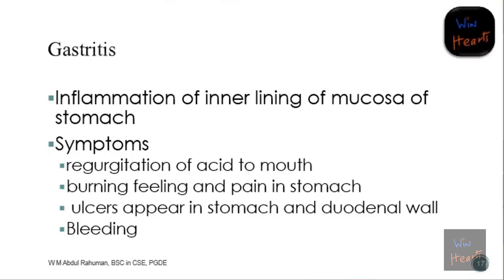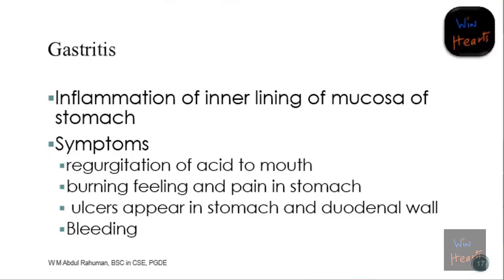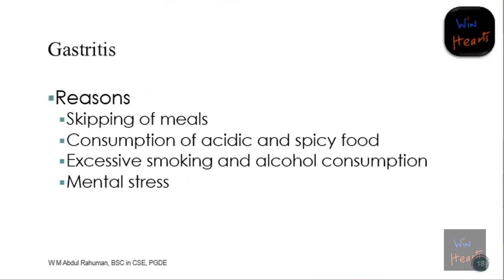Another common symptom is a burning sensation or pain in the stomach. If not treated, ulcers will start appearing in the stomach and may also happen in the duodenal wall. Finally, this can start to bleed - intestinal bleeding can occur because of gastritis. What are the main reasons for gastritis? The first is skipping of meals.